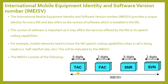The IMEI SV consists of: TAC — Type Approval Code, determined by a central GSM body; FAC — Final Assembly Code, identifies the manufacturer; SNR — Serial Number, an individual serial number of six digits uniquely identifying all equipment within each TAC and FAC; and SVN — Software Version Number, which allows the mobile equipment manufacturer to identify different software versions of a given type-approved mobile. SVN value 99 is reserved for future use.